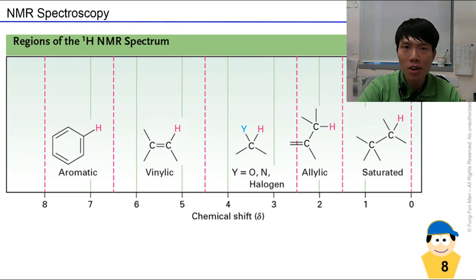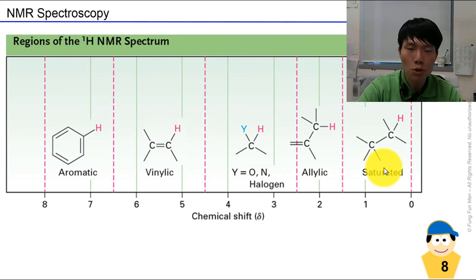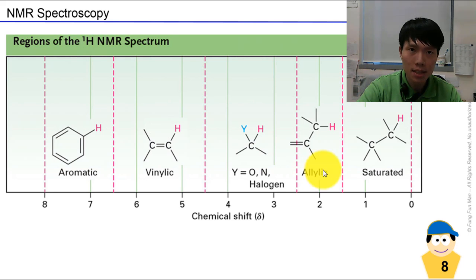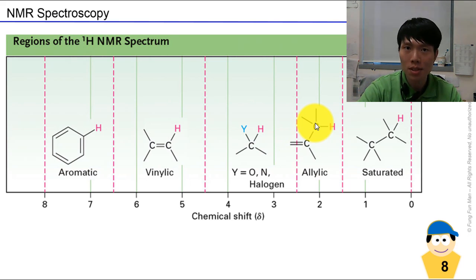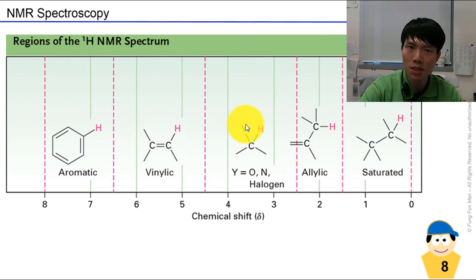Normally in a proton NMR there will be a few zones. The first part is from 0 to about 1.5 ppm — these are the alkanes, the saturated ones. From 1.5 to 2.5 ppm will be the allylic hydrogens. Allylic means you must have a C=C double bond, and the next carbon that connects to it is the allylic position.